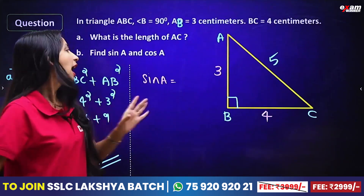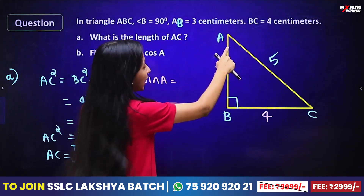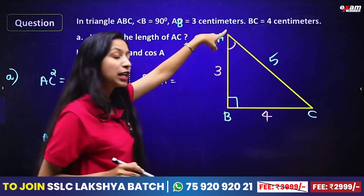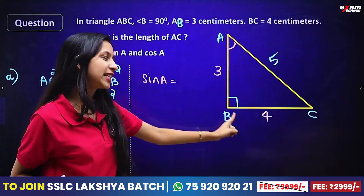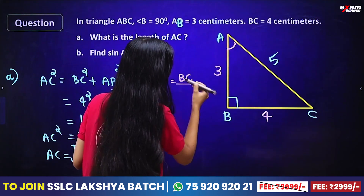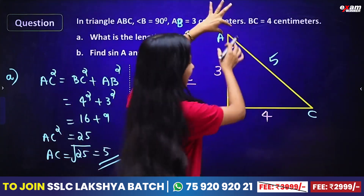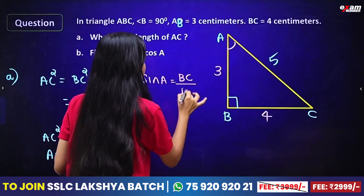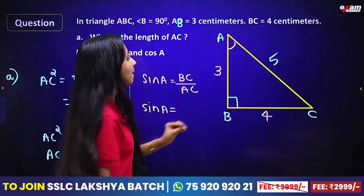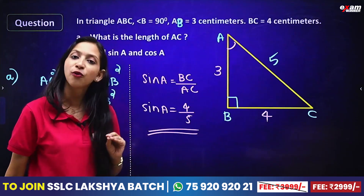What is sin A? We need to identify the sides relative to angle A. The opposite side to angle A is BC. So sin A equals the opposite side BC divided by hypotenuse AC. DC is 4, hypotenuse is 5, so sin A is 4 by 5.